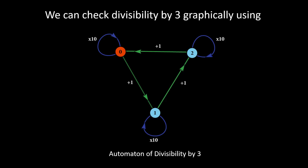This is the automaton we did in the previous video — divisibility by 3 graphically. Using this graph, we can check whether a number is divisible by 3 by following a path through this automaton, provided we already have our number written in a certain way. The plus-ones and times-10 labels were explained in that video.